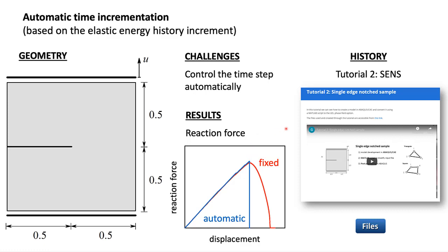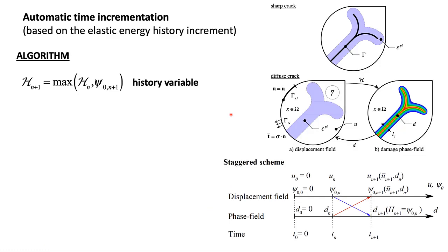We will start with the files already generated in the second tutorial. You can download all the necessary data from this link, or you can go to my webpage and do the tutorial first. First, we need to understand what is the second Staggered algorithm for the phase field solution.